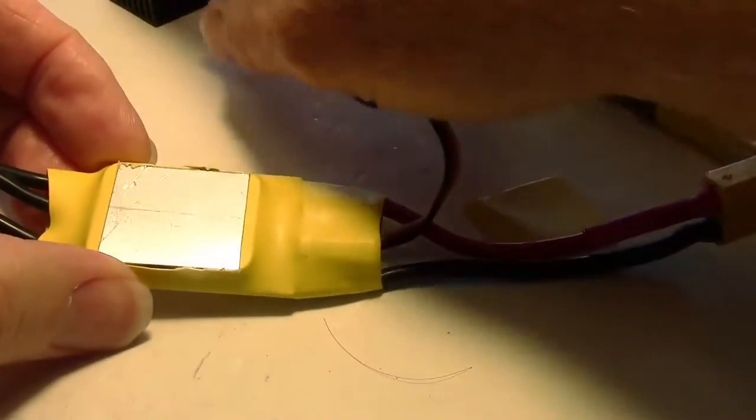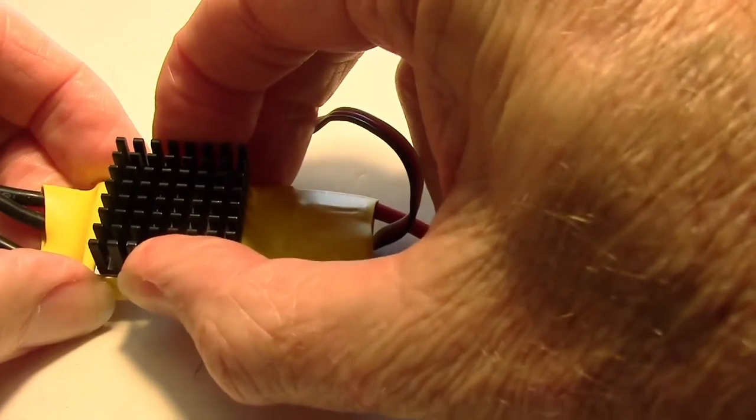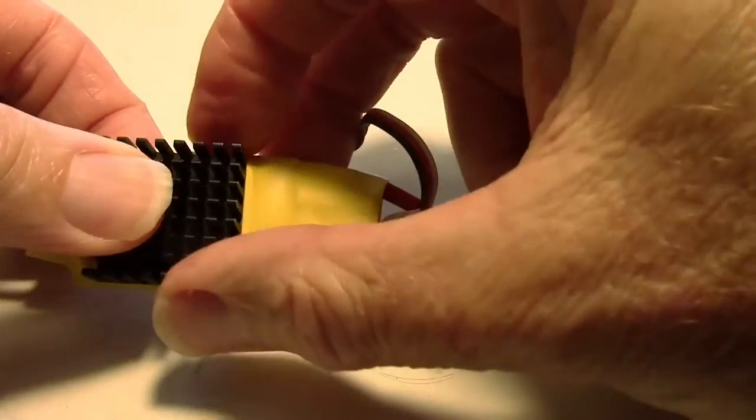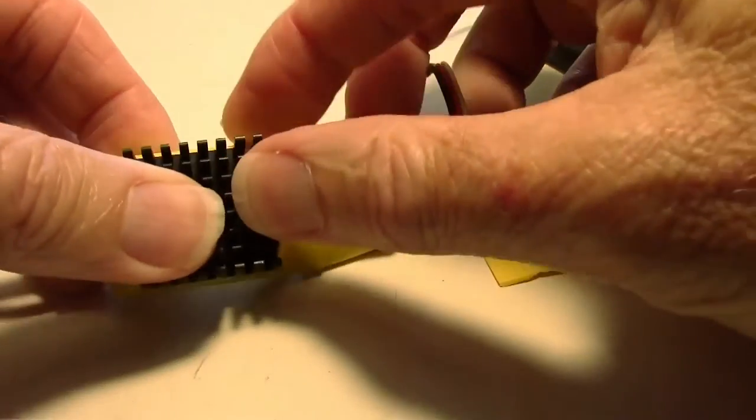And then what we want to do is put a little bit of heat sink compound on here. And get this right against the metal. And then glue it down. Alright, let's do that next.